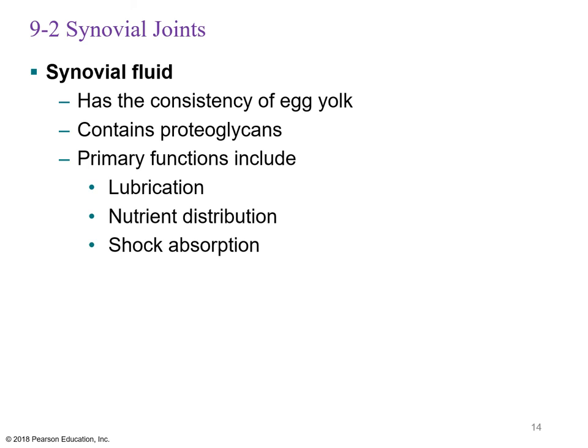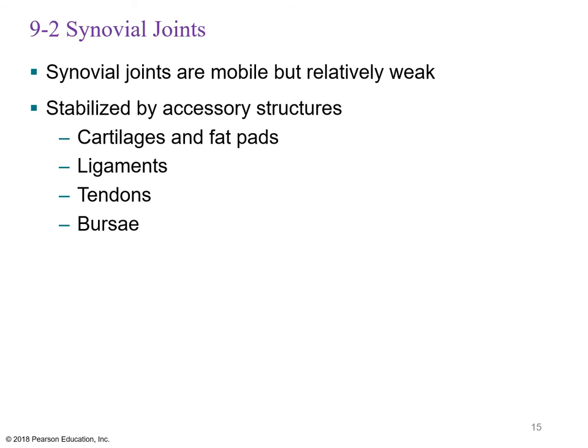Synovial fluid has the consistency of egg yolk and contains proteoglycans — proteins with sugars. Its primary functions are lubrication, nutrient distribution, and shock absorption. Synovial joints are mobile but relatively weak and more susceptible to damage than synarthroses or amphiarthroses. Accessory structures such as cartilage, fat pads, ligaments, tendons, and bursae help support the joint.